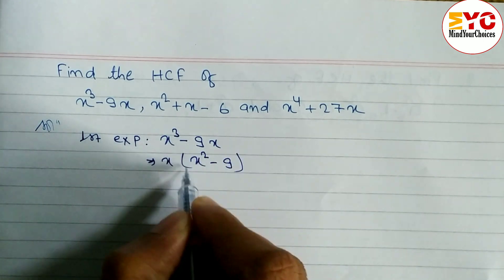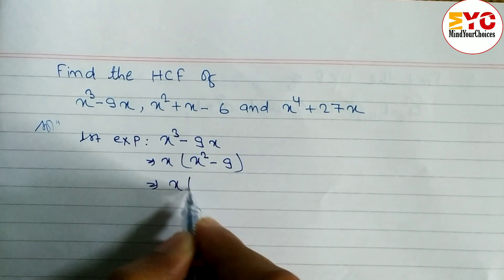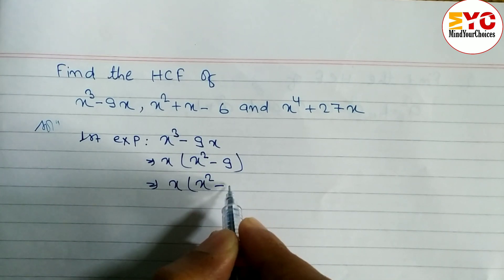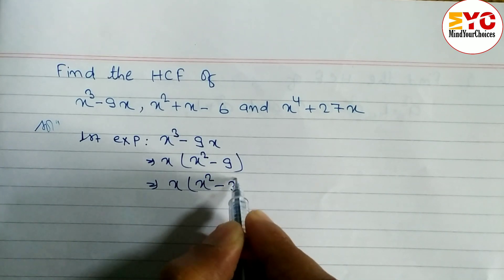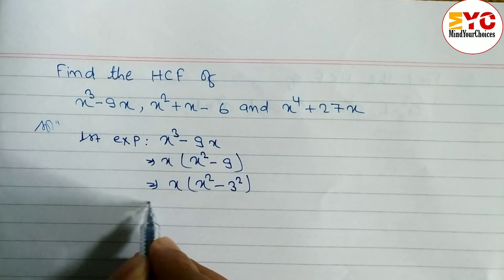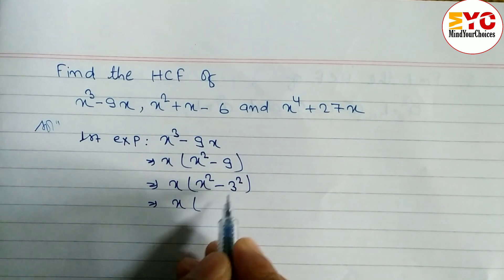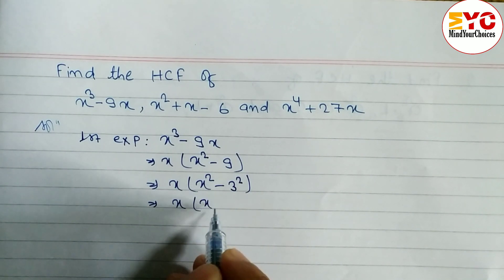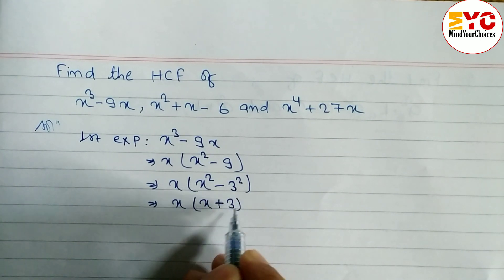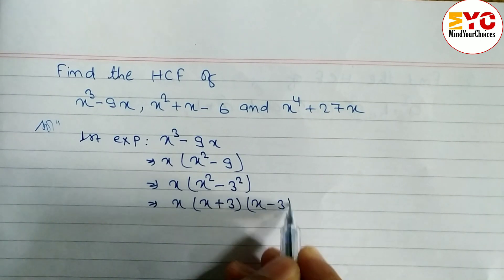Now we have to convert this in the form of a square minus b square. We can write x square minus, and in the place of nine we write three square, since three square means nine. So we write in the form of a square minus b square: x plus three, x minus three.